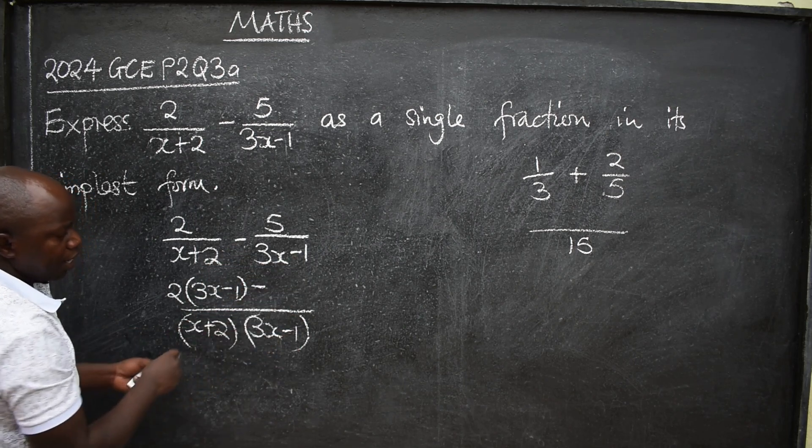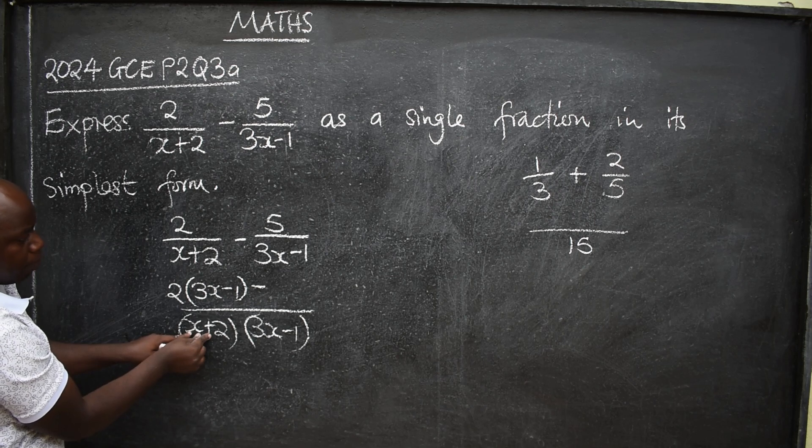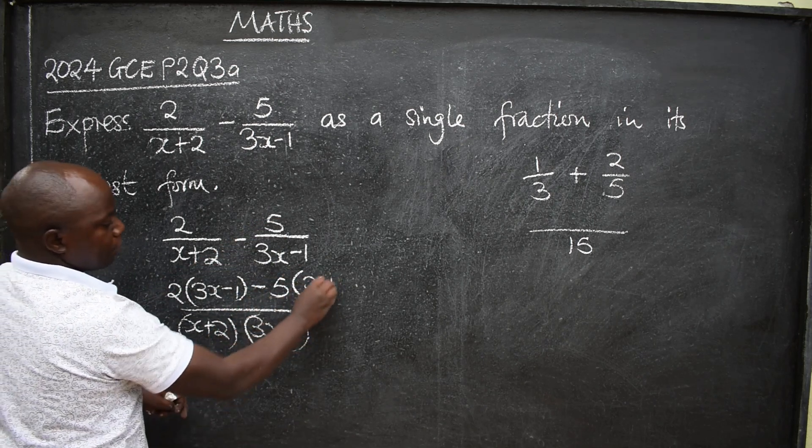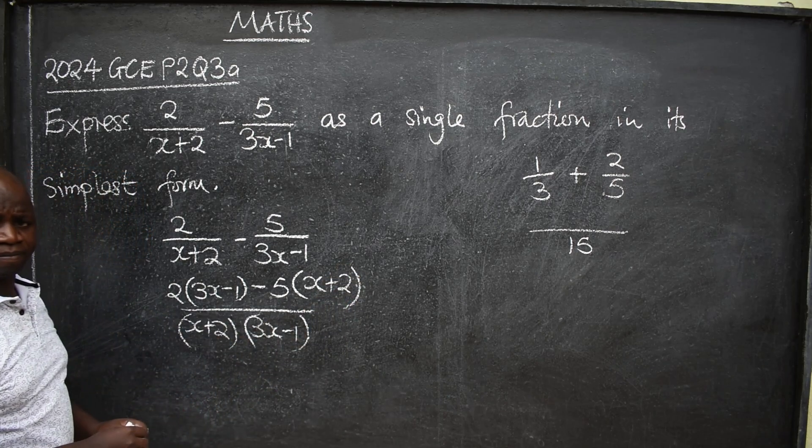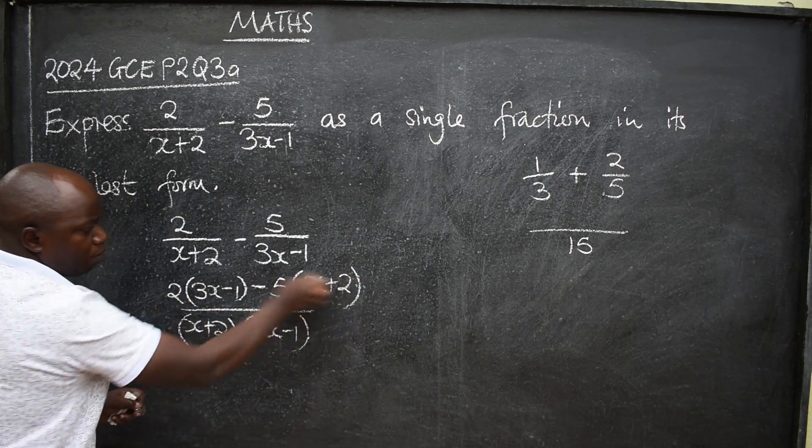You do the same on the other side. You cover this and this. You remain with this. x plus 2 multiplied by 5. Write 5x plus 2, like this. Then your duty is to simplify the numerator here.